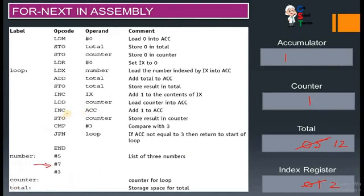Then increase accumulator — one is added, so accumulator becomes two. Then store counter — counter becomes two. Then compare the value of accumulator with three — accumulator is two and we are comparing with three, so they are not equal. Jump if not equal to loop — the condition is true, so it jumps back to loop again.